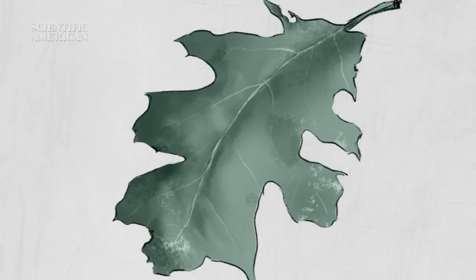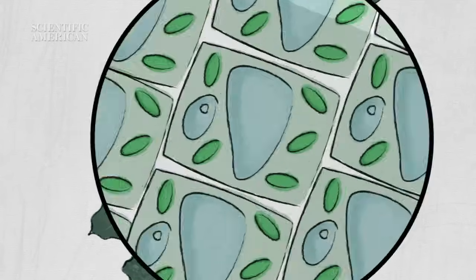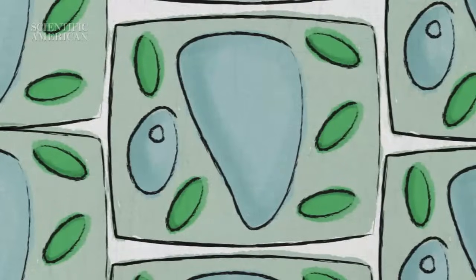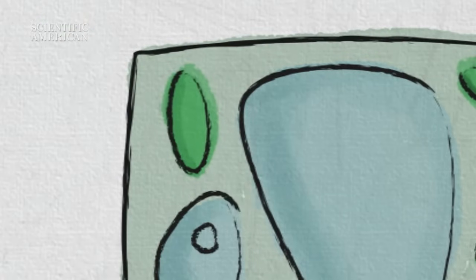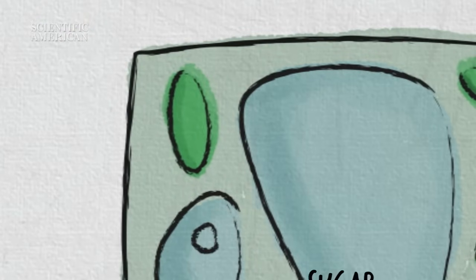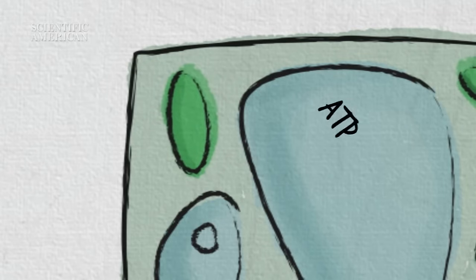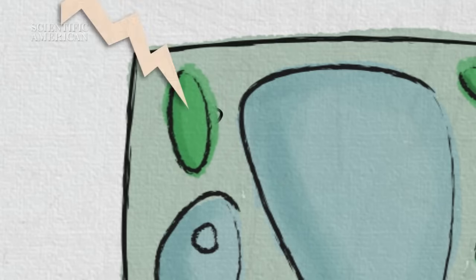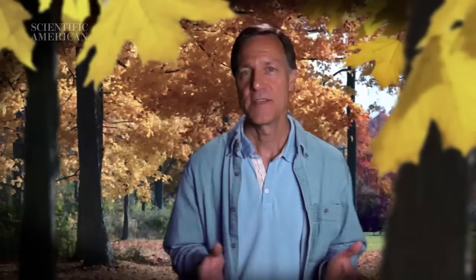Most leaves contain chlorophyll, a green pigment that starts the process of photosynthesis. Chlorophyll helps convert sunlight, carbon dioxide, and water into sugars that travel to the branches and the roots, feeding the tree. Chlorophyll breaks down and is replenished all summer long.